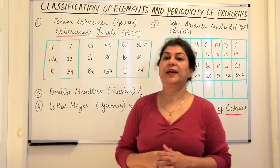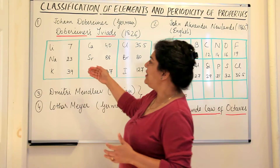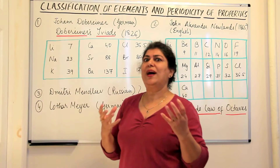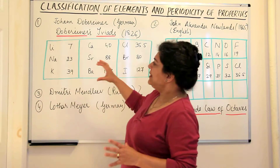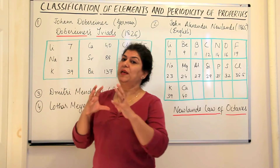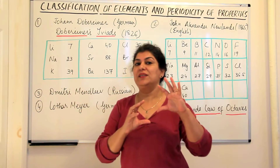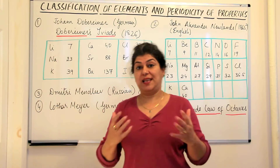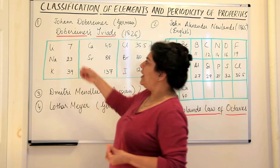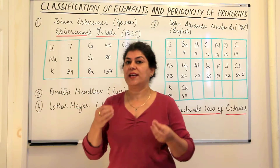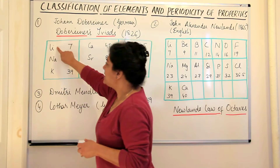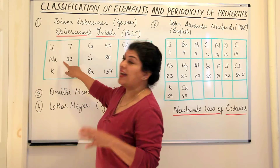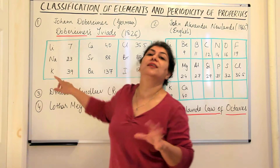He could make just three triads on the basis of their increasing atomic masses. What was the relationship that he found, and why could he make only three triads? He found that these groups of three elements had something very special. One, they had chemical properties that were similar. Two, when you arrange them according to their increasing atomic masses, the middle element was actually the average of the masses of the first and the third.